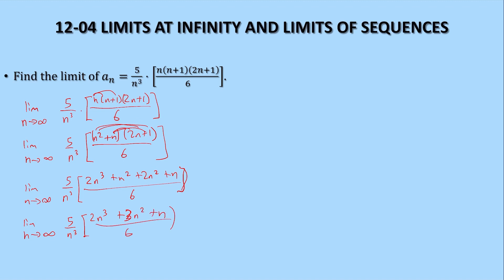And now we can distribute that. The limit as n approaches infinity. So it would be 10n cubed plus 15n squared plus 5n all over 6n cubed.